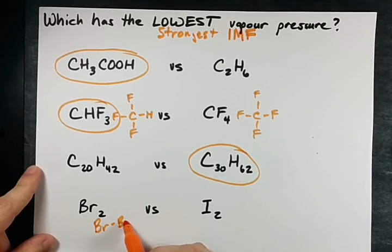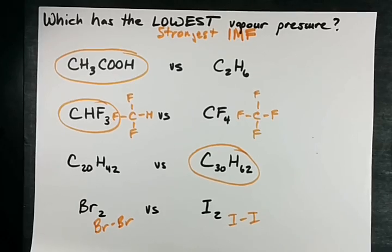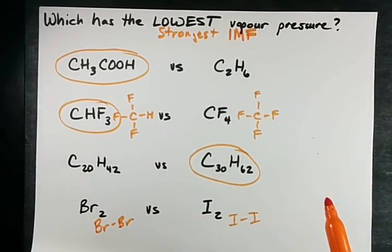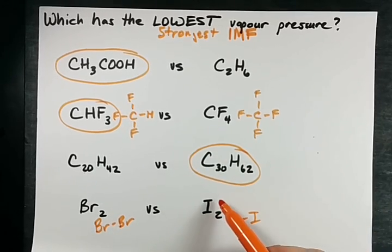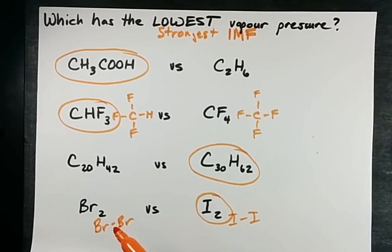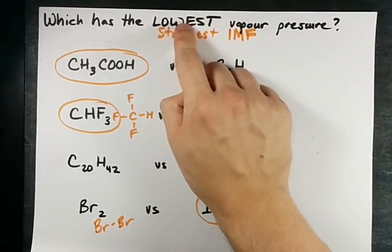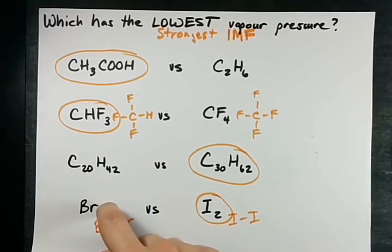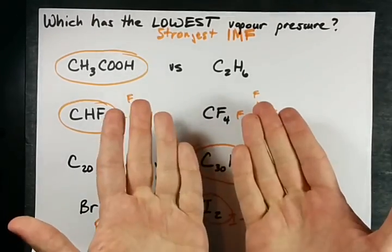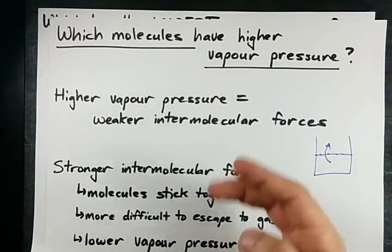Br₂ is just two bromines single-bonded together — non-polar. I₂ is two iodines connected to each other — non-polar. It's going to come down to London dispersion forces. I₂ is the heavier molecule, so it will have the stronger intermolecular forces and the lower vapor pressure. If this had said highest vapor pressure, we would have picked the ones with the weaker intermolecular forces on a relative basis. I hope you find this pretty easy — that's just the way it goes. Best of luck to you.